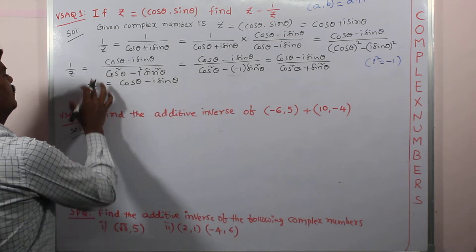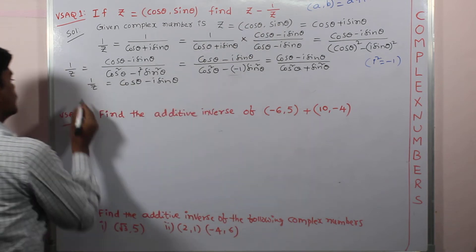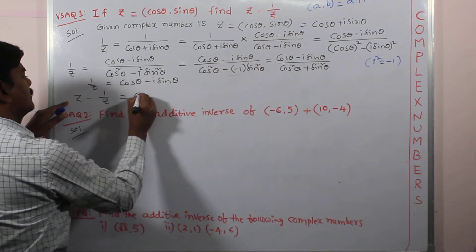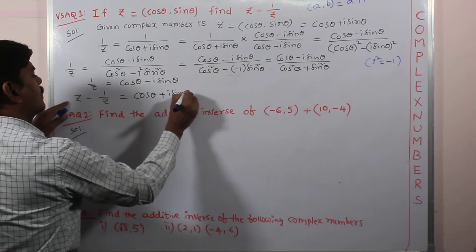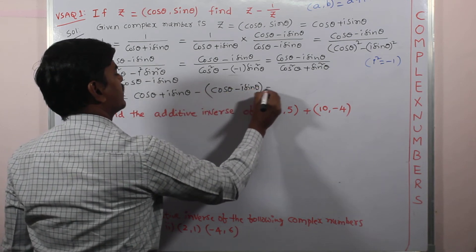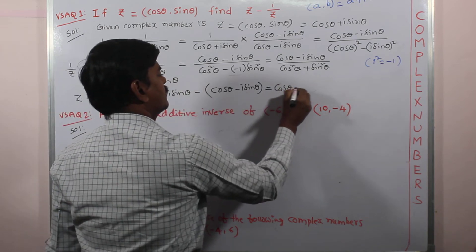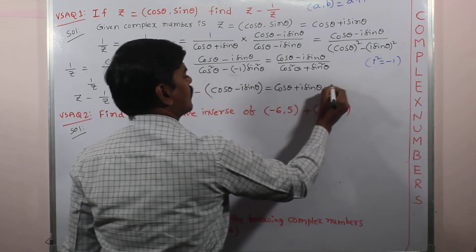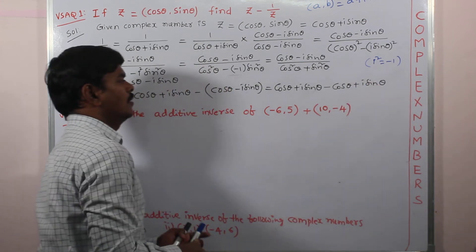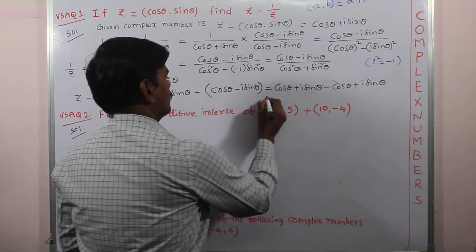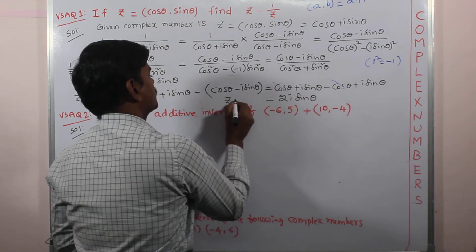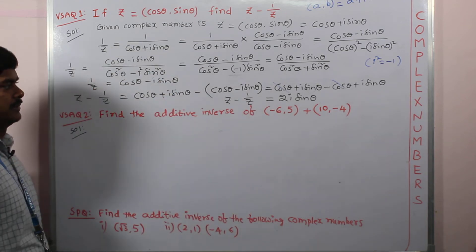Now after having 1 by z, we can find z minus 1 by z. Substituting: z is cos theta plus iota sin theta, and 1 by z is cos theta minus iota sin theta. Expanding: minus into plus gives minus cos theta, and minus into minus gives plus iota sin theta. The cos theta terms cancel, and the required answer is iota sin theta plus iota sin theta, which equals 2 iota sin theta. This is the value of z minus 1 by z.